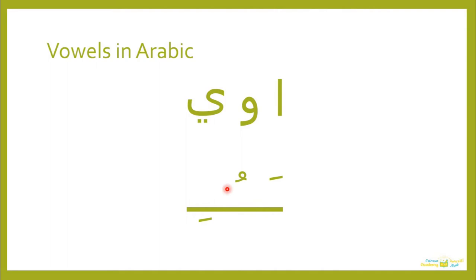So these are the vowels in Arabic — A, U, I. And these three long vowels are three of the Arabic alphabets. This is the alif, this is the waw, and this is the ya. We will cover them separately in future lectures, but right now we will understand their purpose as vowels.